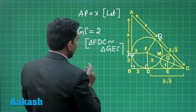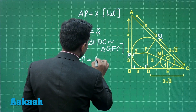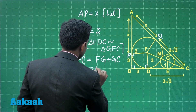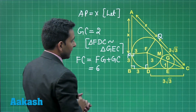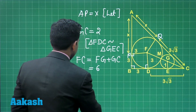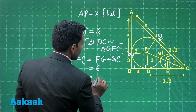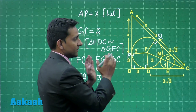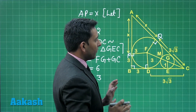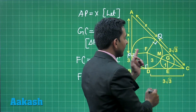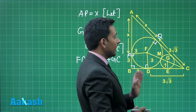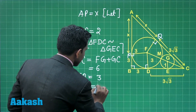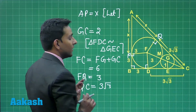Since we have the length of GC, we can calculate the length of FC, which equals FG plus GC — that is 4 units plus 2 units — giving FC equal to 6 units. We already have FQ equal to the radius of the larger circle, which is 3 units, and angle FQC is 90 degrees because AC is tangent to both circles. Applying the Pythagorean theorem in right triangle FQC gives QC equal to 3√3 units.